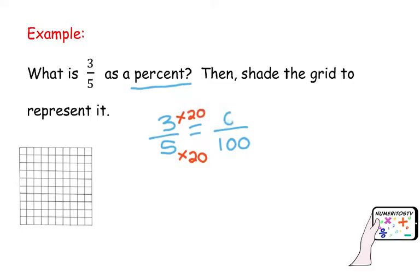So, 3 times 20, that will be 60. So, 3 fifths is equivalent to 60 hundredths. So, once I have my fraction over 100, I just get rid of that denominator and add the percent symbol. So, 3 fifths is equivalent to 60%.